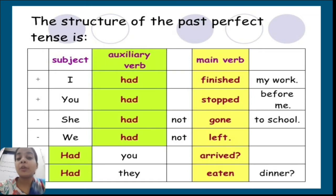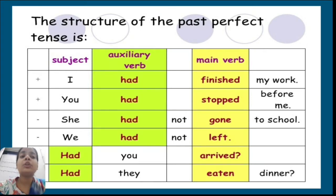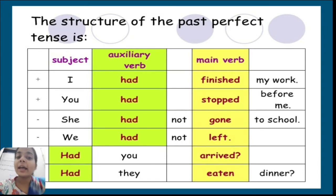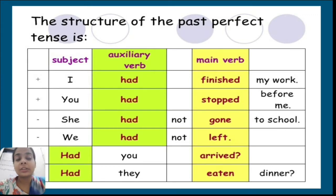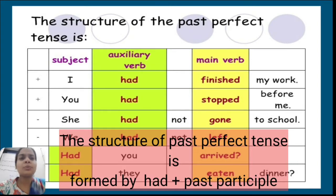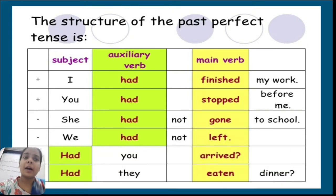For negative sentences, we simply add 'not'. Like 'She had not gone to school' — 'gone' is the past participle form of the verb 'go'. Another example: 'We had not left.' For interrogative sentences, there is an inversion of the auxiliary verb 'had' and the subject — like 'Had you arrived?' or 'Had they attend dinner?' The structure uses only two elements: auxiliary verb 'had' and the main verb in past participle form.